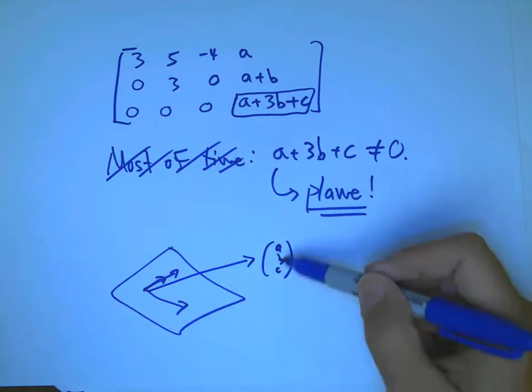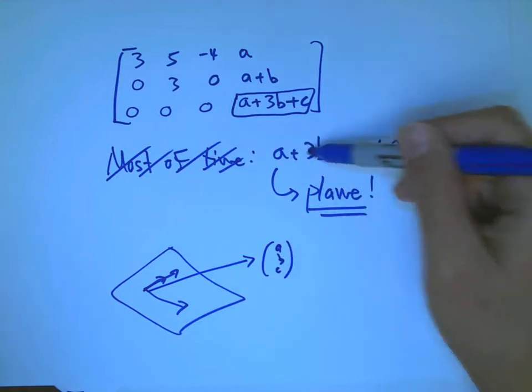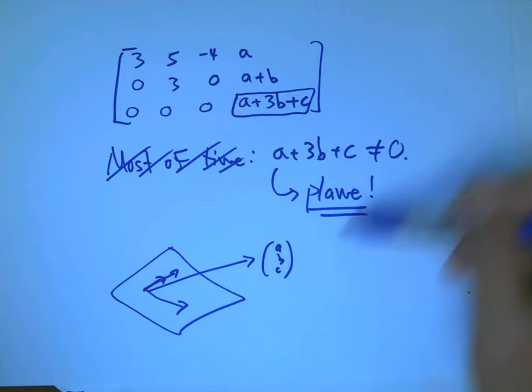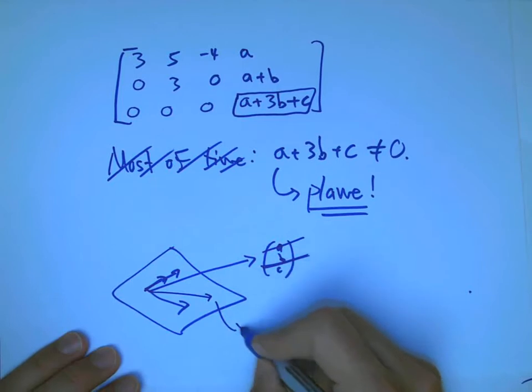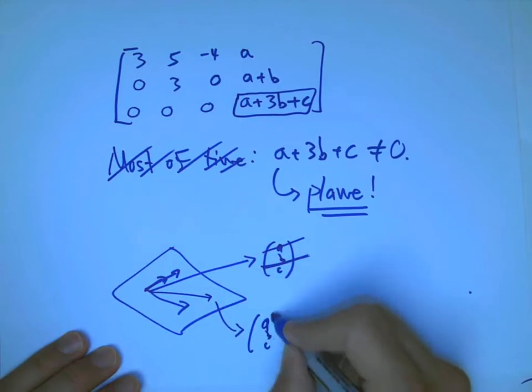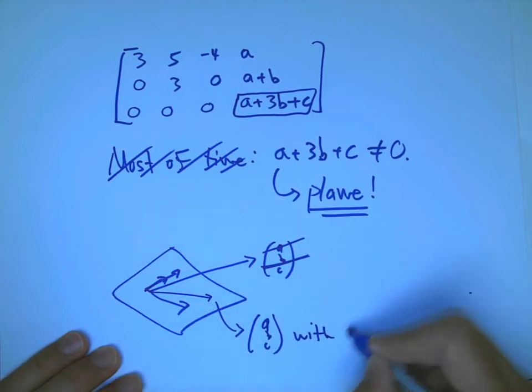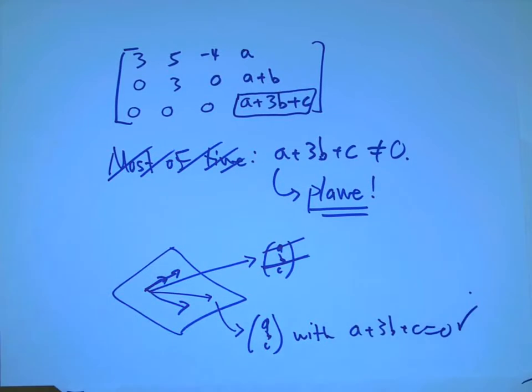We're saying that if I take some w, a, b, c, and that doesn't satisfy a plus 3b plus c equals zero, then it's not in the plane. So, that one's bad. But this one, maybe, if that does satisfy this equation, that is going to work. And so, we've taken a parameterized version and turned it into an implicit version.